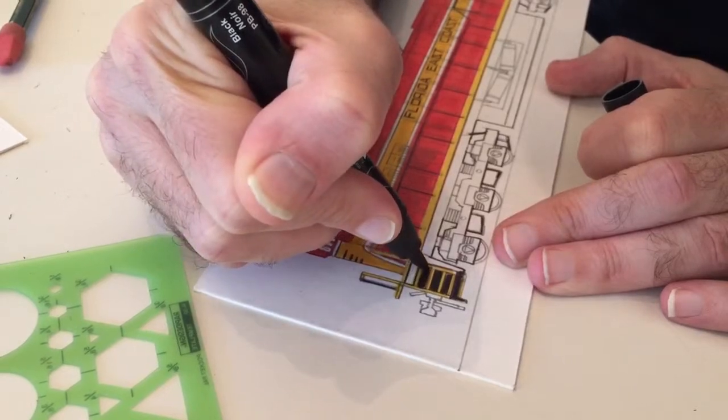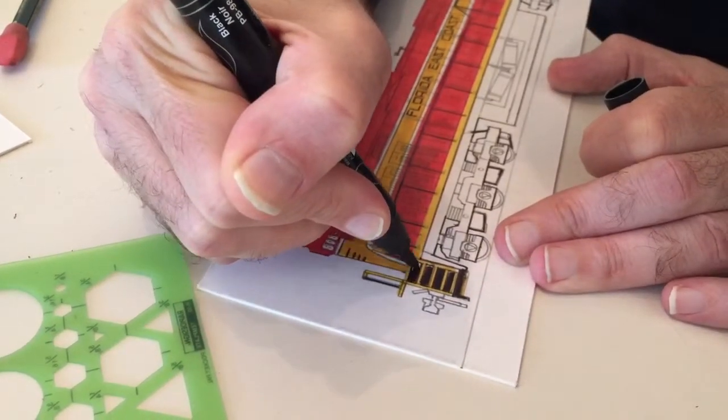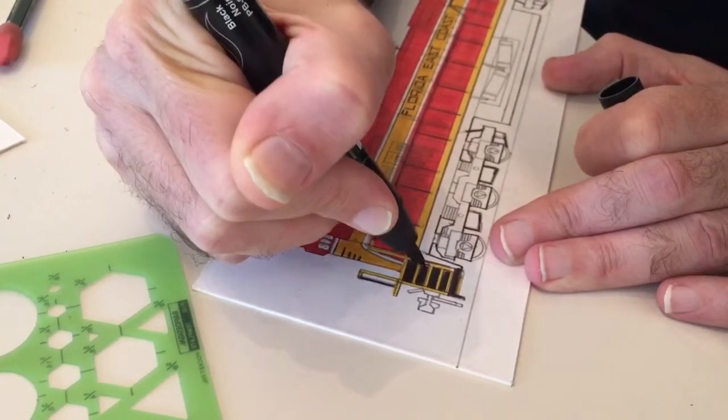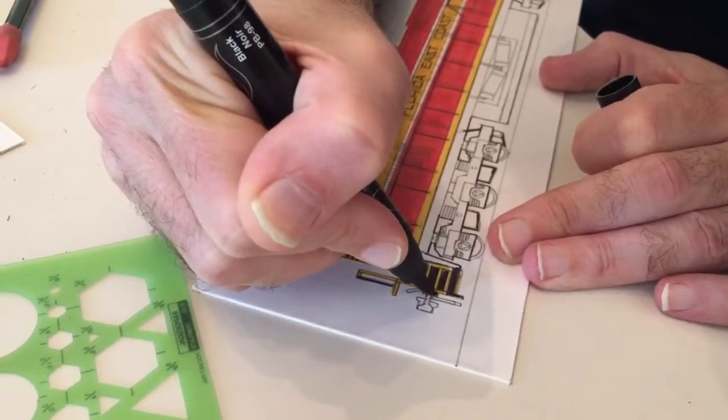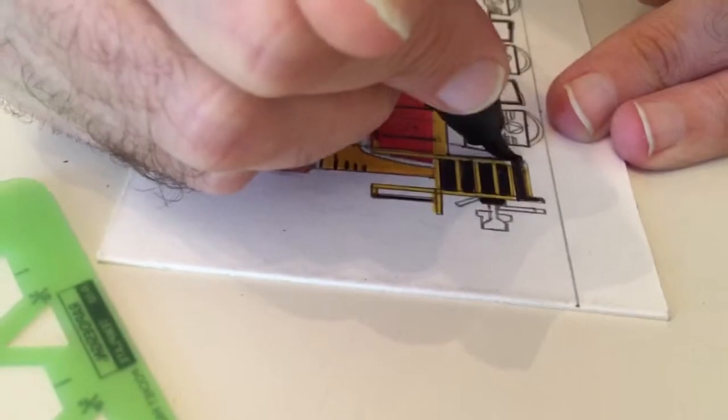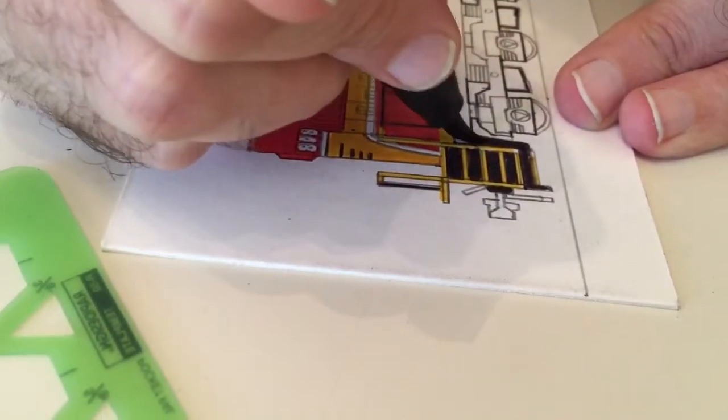Not as delicate as, say, going around the logos and stuff, but they're delicate in the sense that you want to keep a nice tight edge so that the steps look straight and smooth.